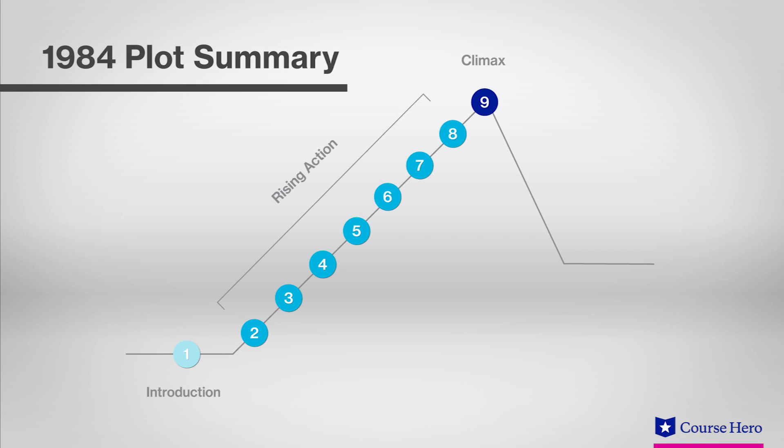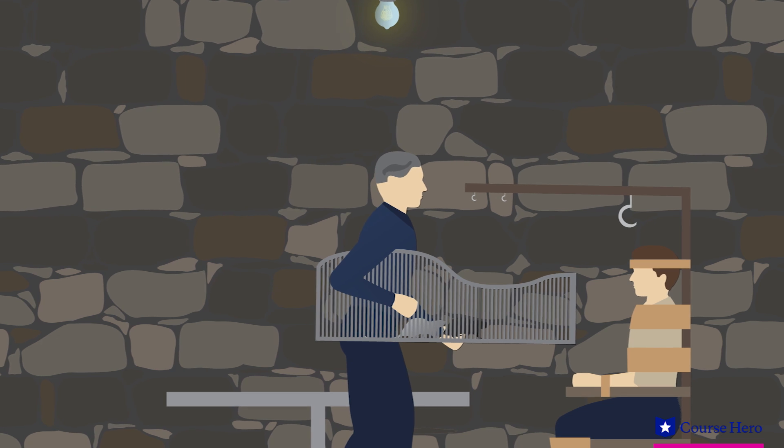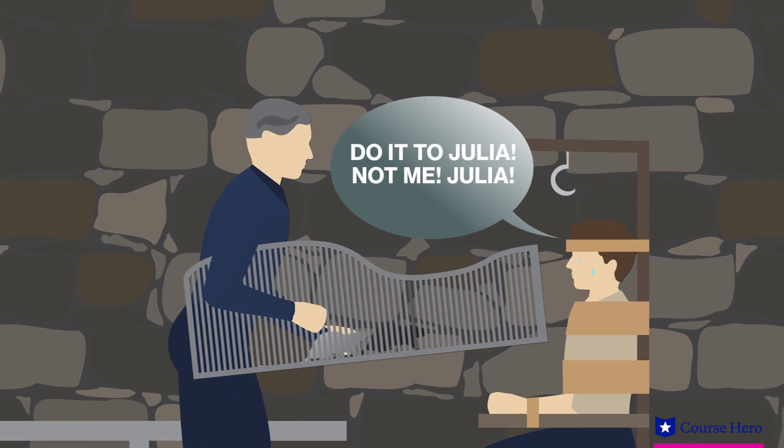During the terrifying climax of 1984, O'Brien tortures Winston in the Ministry of Love. Threatening Winston with rats, his greatest fear, O'Brien gets Winston to turn on Julia, destroying his love for her and breaking his spirit.